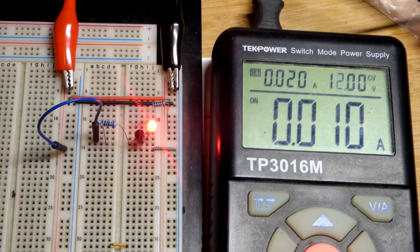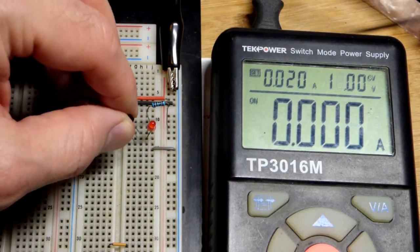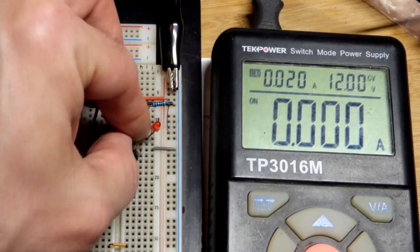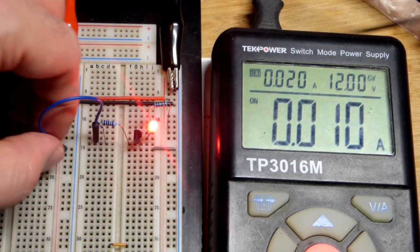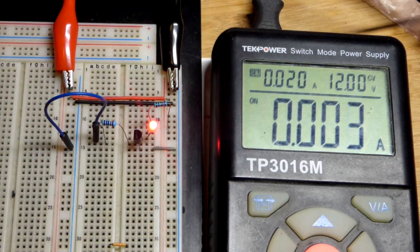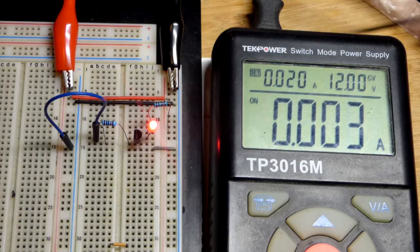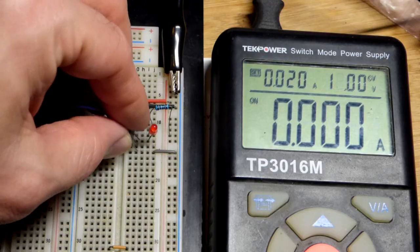But yeah, in any case, that was the demonstration right there. Again, if you were confused at all, the problem is that this should be on right now the way we have it. It's backwards right now, the transistor. But now it should be off right there if it's wired the proper way. But it's backwards. We got the emitter where the collector should be. So now we'll put it in the right way.